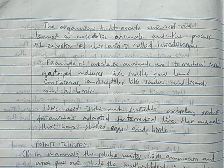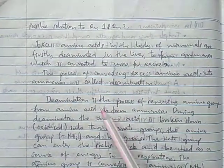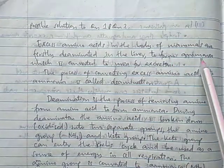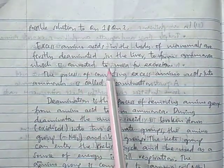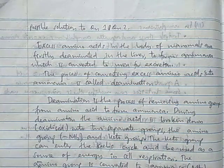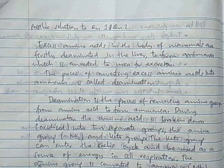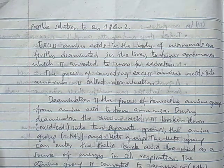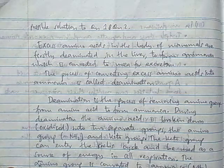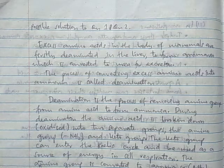Excess amino acids in the body of mammals are firstly deaminated in the liver to form ammonia, which is converted to urea for excretion. Excess amino acids cannot be stored in the body, so they are deaminated and then the ammonia from deamination is converted to urea.